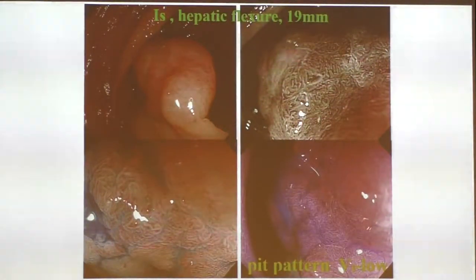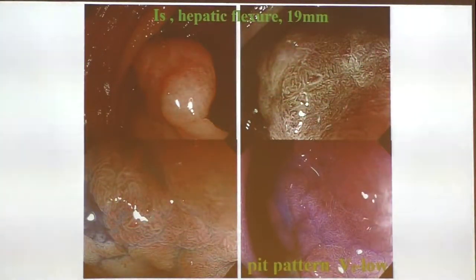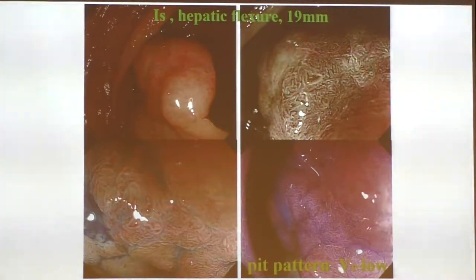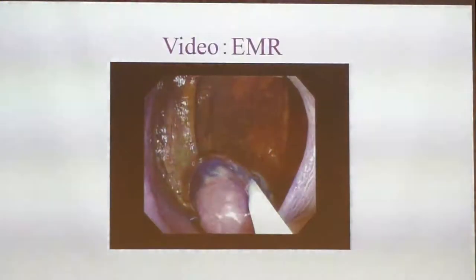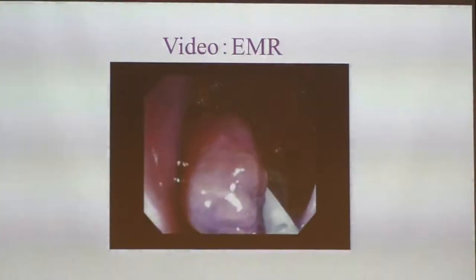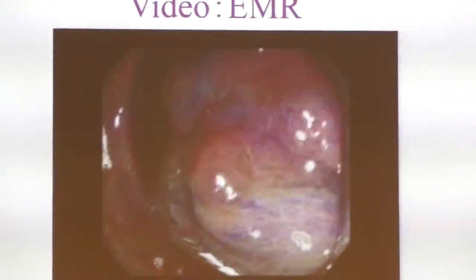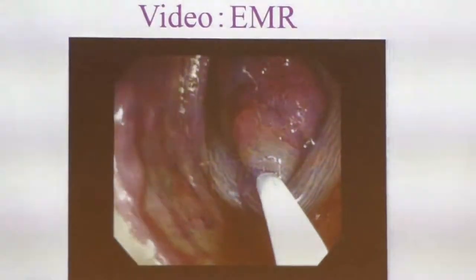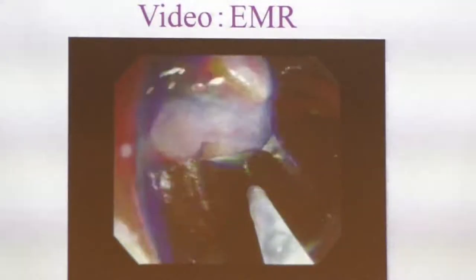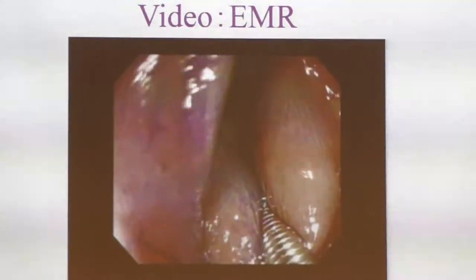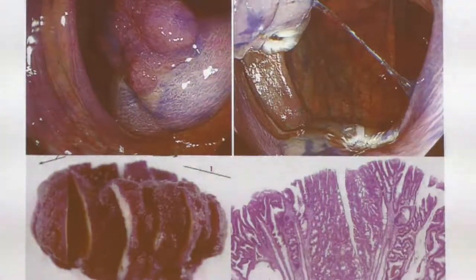Another case: the lesion was not very big, but it was located just on the hepatic flexure. In that case, you should start the injection at the proximal side of the lesion — the ascending colon side. Don't inject at the distal part first. If you inject the distal part, the injection will push the lesion toward the ascending colon, and you will not see the lesion quite well. After a good elevation, the resection was rather easy. The final diagnosis was also intramucosal cancer.